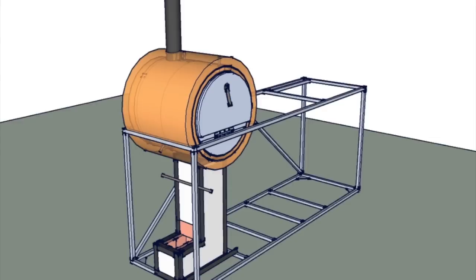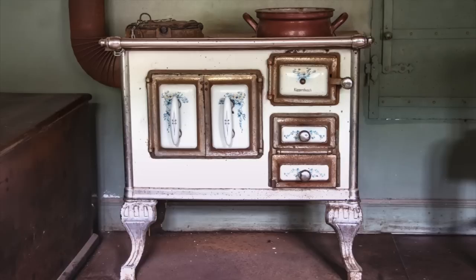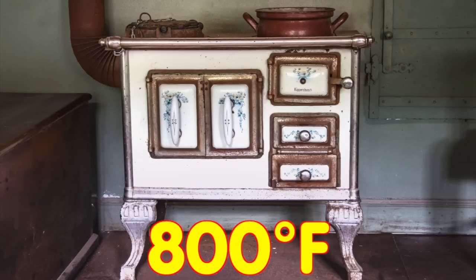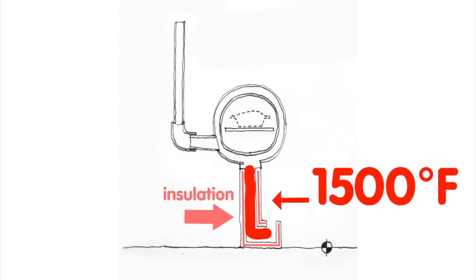The key component to a rocket oven is the super insulated J-tube burn tunnel. An old school wood cook stove will have a fire of around 800 degrees and put out a fair bit of smoke. A rocket oven insulates the fire so it can get to over 1500 degrees and burn all the smoke and creosote.